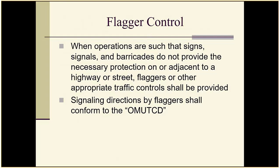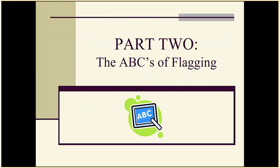The Ohio Manual of Uniform Traffic Control Devices, Part 6, states that when signs, signals, and barricades do not provide the necessary protection on or adjacent to a highway or street, flaggers or other appropriate traffic controls shall be provided. Signaling directions by flaggers shall conform to the OMUTCD. There's an entire section in the temporary traffic control manual about proper signaling directions for flaggers.